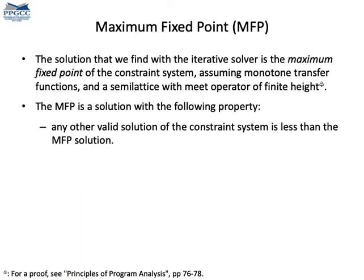Given that the same system of constraints can have multiple fixed points, which one is the one that we find? We find the maximum of them — the greatest fixed point. This happens if we are using the meet operator. If we are using join, then we find the minimum fixed point. There is a proof about that in Nielsen's book.